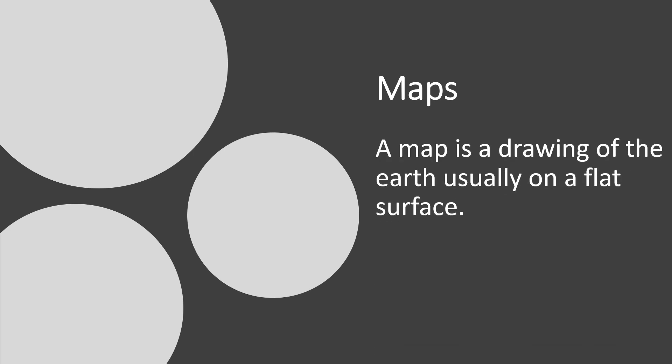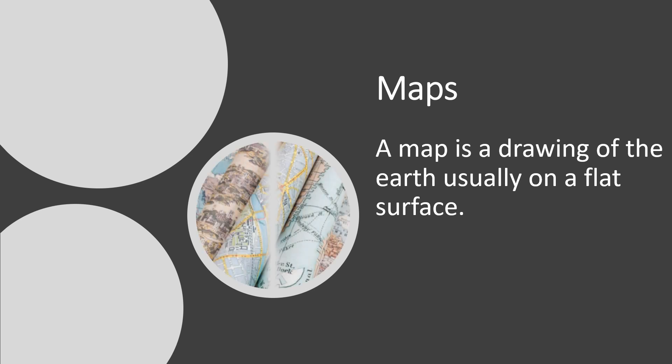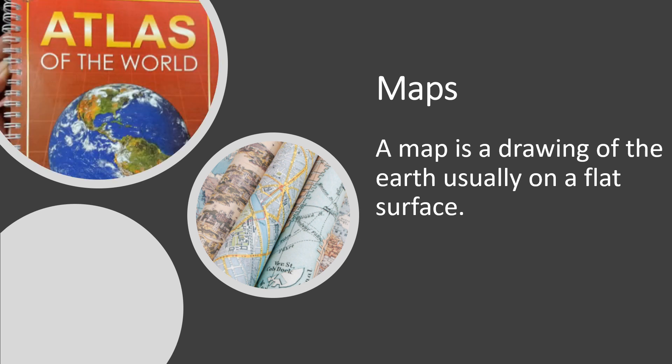What are maps? A map is a drawing of the earth usually on a flat surface. The word map comes from the word mappa, meaning napkin in Latin. You can carry maps from one place to another and look at them whenever you are traveling. These days you can get maps in the form of charts, books, and even in the form of napkins.